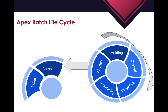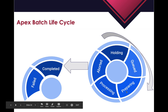What is the Batch Apex lifecycle? Whenever we execute a Batch Apex from anonymous window or from another class, it always starts from the Holding state - meaning the batch has been sent to the Apex Flex Queue and is waiting for its turn to get executed. If the flex queue has reached its maximum capacity of 100 jobs, it will immediately go to the Failed state. Otherwise it will wait in the Queued state.